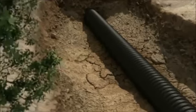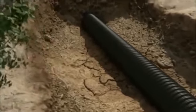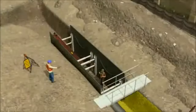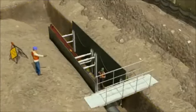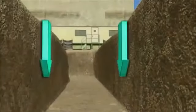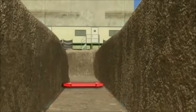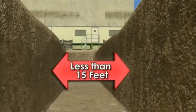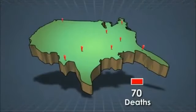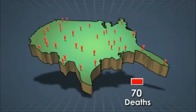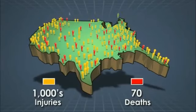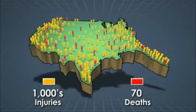An excavation is any man-made cavity created in the ground by removing earth. A trench is a kind of excavation — it is a narrow channel that is deeper than it is wide. The term trench is typically applied to channels that are less than 15 feet wide at their base. Excavating is one of the most dangerous operations in construction work. There are an average of 70 deaths each year in the U.S. due to excavation accidents and thousands more injuries.